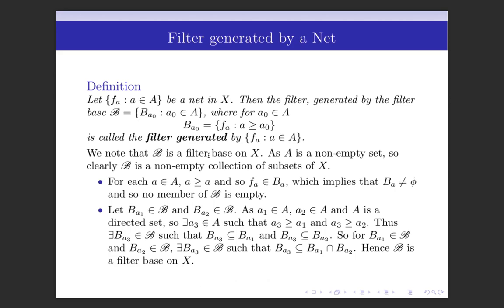Let us define a filter generated by a net. Let {f_a : a ∈ A} be a net in X, meaning f is a mapping from a directed set A to set X. Then the filter is generated by the filter base B containing sets of the form B(a₀), where a₀ ∈ A, and B(a₀) is the set of elements f(a) such that a ≥ a₀. This is called the filter generated by {f_a : a ∈ A}.